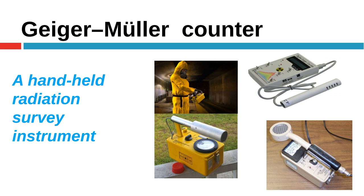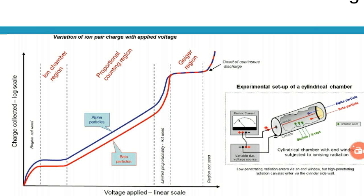While discussing gas detectors, we refer to the graph with applied potential along the x-axis and output signal along the y-axis. The first region is the recombination region, the second is the ionization chamber region, the third is the proportional counter, followed by the limited proportionality region. Beyond that is the Geiger region — a plateau region — where the Geiger-Müller counter operates.